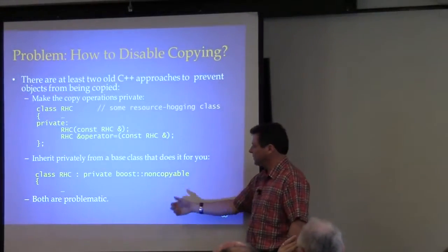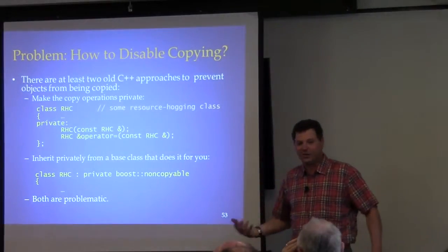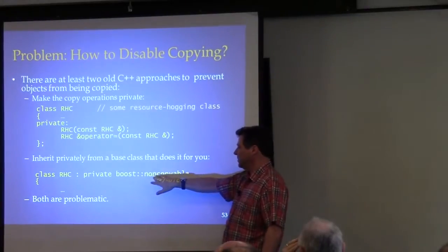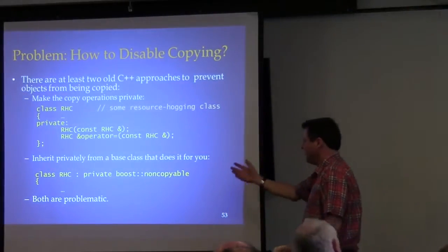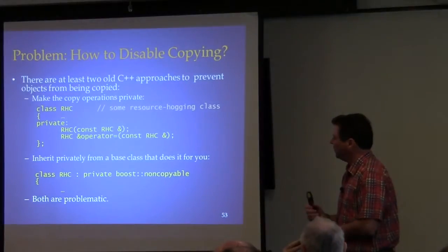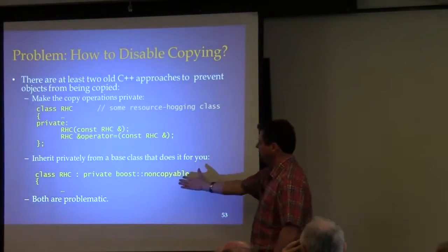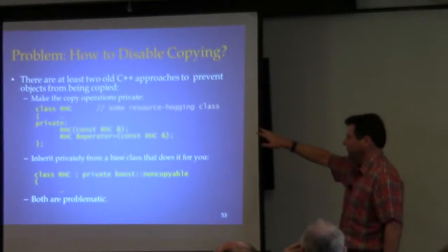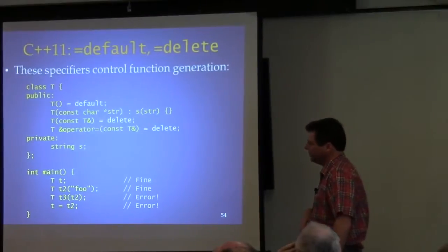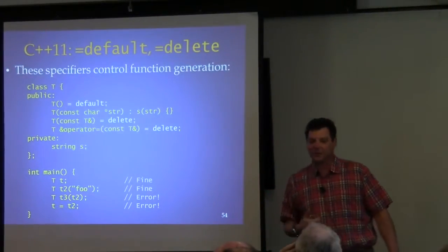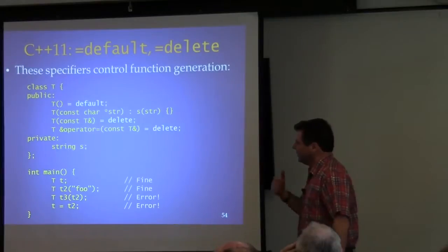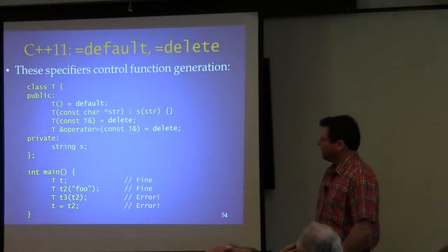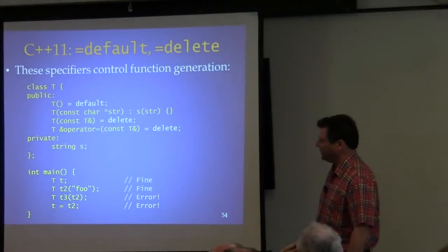You use private inheritance to make sure the class is not copyable. An example is boost::noncopyable, something available for this purpose. But they're not perfect solutions. Fortunately, C++11 does give you the perfect solution. If you're not going to allow something to be used, you just say equals delete. Notice the clever recycling of an existing keyword.